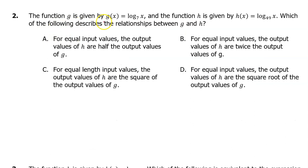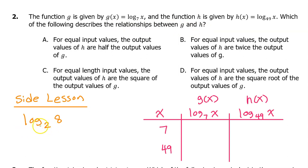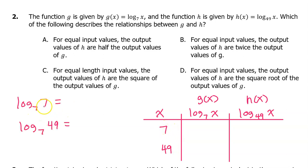Number 2. The function g is given by g of x equals log base 7 of x, and the function h is given by h of x equals log base 49 of x. Which of the following describes the relationship between g and h? A logarithm is the exponent that turns the base into the other number. So log base 2 of 8 is 3 because 2 to the third power is 8. Let's evaluate g of x and h of x at two numbers we can calculate easily. The log base 7 of 7 is 1 because 7 to the 1st power is 7. The log base 7 of 49 is 2 because 7 to the second power is 49.